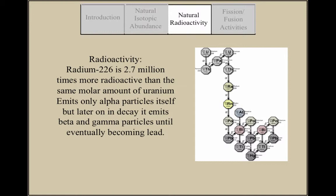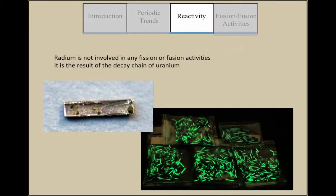Because of this radioactivity, radium will also maintain a higher temperature than its surroundings. Radium is not involved in fusion or fission. Radium is formed from uranium, emitting alpha, beta, and gamma radiation, not from fission or fusion. It also decays by releasing alpha particles, not fission or fusion.